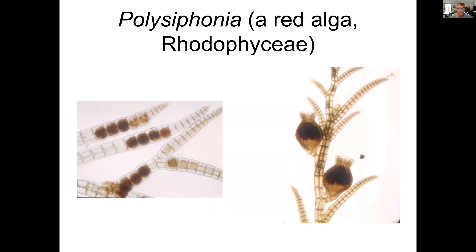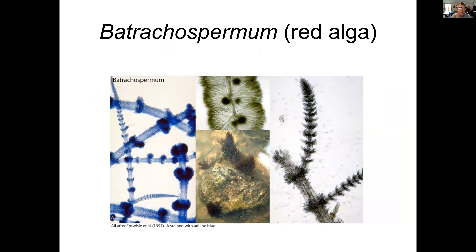Red algae — Polysiphonia has that reddish color, hence the name. They're not extraordinarily common in fresh waters, but there is one, Batrachospermum, that can be found in many streams around the world. The blue one in the image is just stained so you can see it better, but you can get a greenish or even reddish look to it depending on the pigmentation. It has a complex morphology with many cells together.